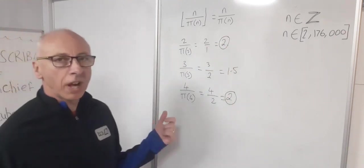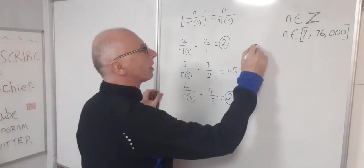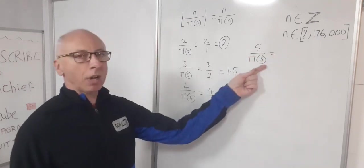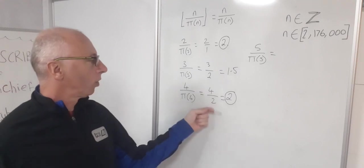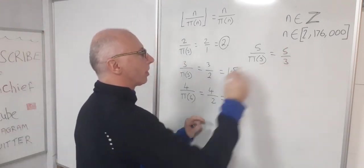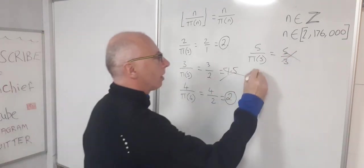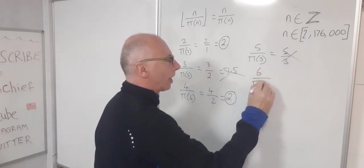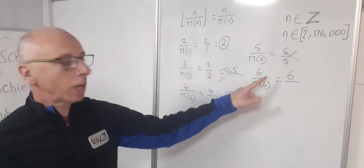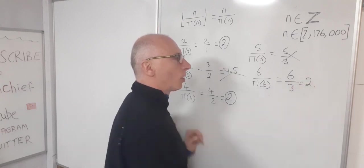Now we're just going to look at two more, we'll just look at 5 and 6, then I'm going to show you something weird that happens after that. So 5 over pi of 5. Now we know there's now another prime number since we did 4. So now there's three prime numbers and obviously 5 over 3 that's not an integer. So that's no good to us. So these ones no good. And then 6, this is the last one we're going to look at for now, pi of 6. So that gives us 6 and we know there's three prime numbers up to and including 6 because 6 is not a prime. So then that gives us 2.